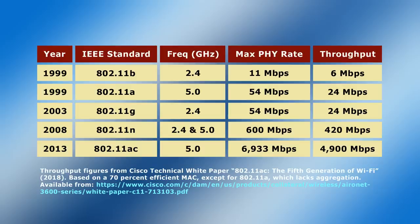If this is hard to get your head around, imagine a train transporting carriages full of data. In this analogy, the PHY rate reflects the speed of the train — the rate at which carriages can travel down the track. But throughput indicates how much data is actually transported, and this will depend on things like how full the carriages may be.